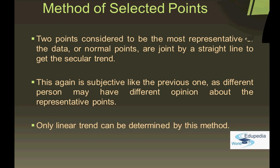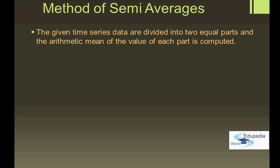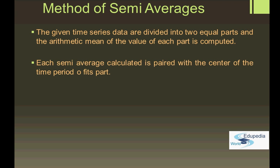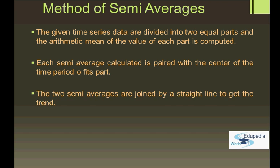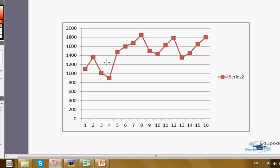Improving upon this, let's move on to the method of semi-averages, the second method under the method of averages. Here the given time series data are divided into two equal parts, and the arithmetic mean of the values of each part is computed. Each semi-average is paired with the center of the time period for that part, and the two semi-averages are joined by a straight line to get the trend.